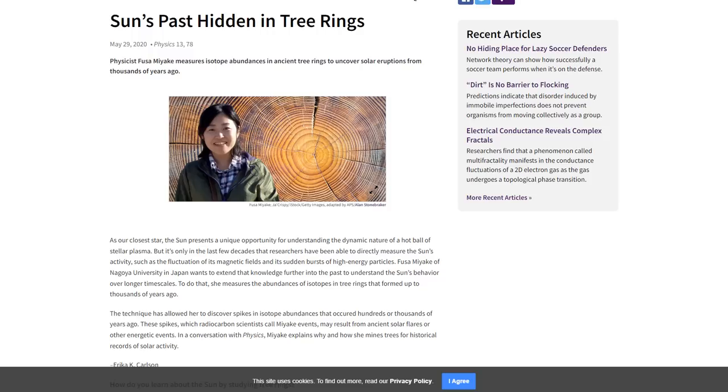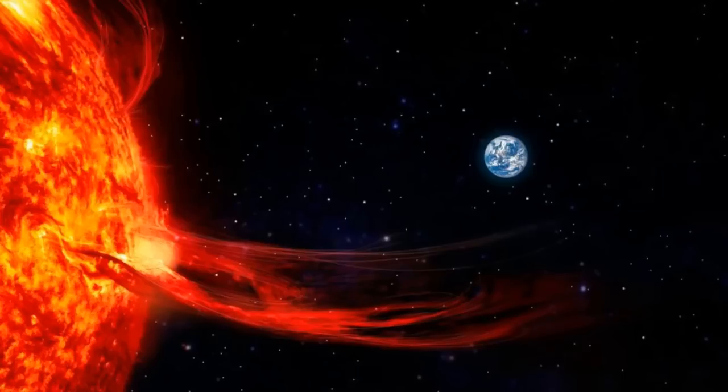The leading theory is that these events were huge solar flares. But we need to know more because if one of these happened today, it would destroy technology including satellites, internet cables, long-distance power lines, transformers, and more. It would also light the world on fire. The effect on global infrastructure would be literally unimaginable.